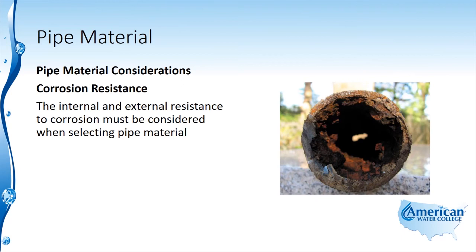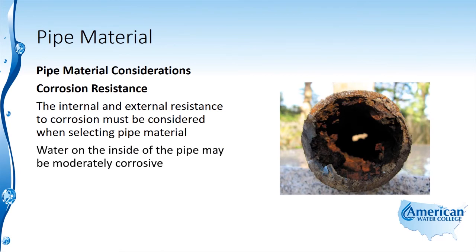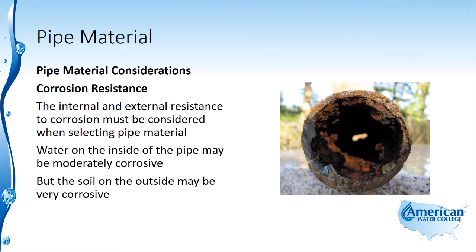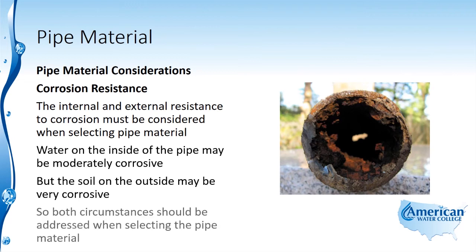The internal and external resistance to corrosion must be considered when selecting pipe material. Water on the inside of the pipe may be moderately corrosive, but the soil on the outside may be very corrosive. So both circumstances should be addressed when selecting the pipe material.